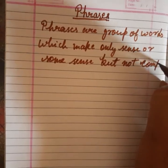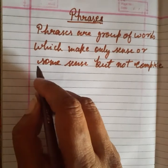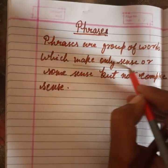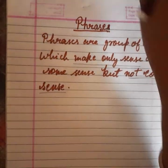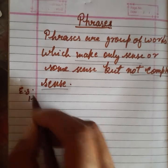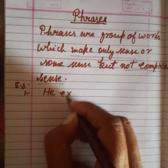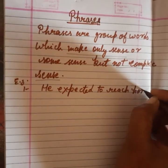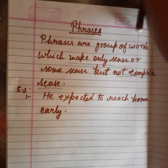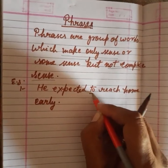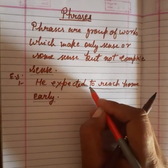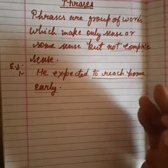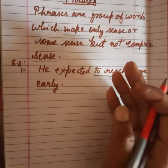A phrase is a few words grouped together that have some meaning or some particular meaning, but they do not give complete meaning — that would be a sentence. For example: 'he expected to reach home early.' Here, 'to reach home early' is the phrase.